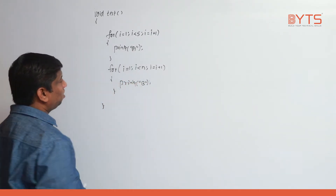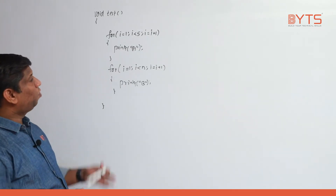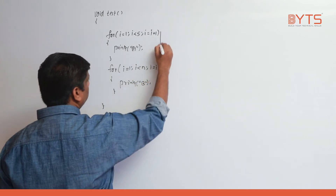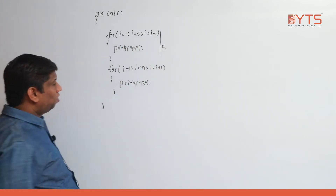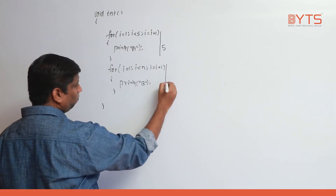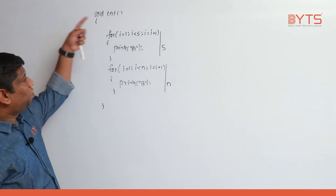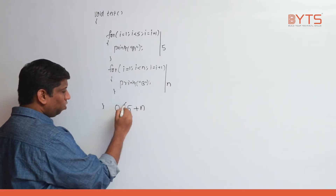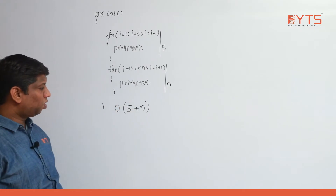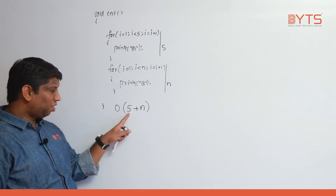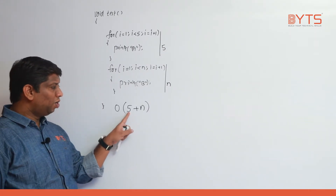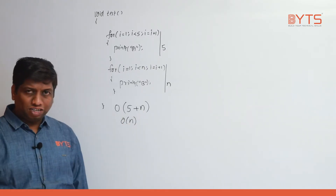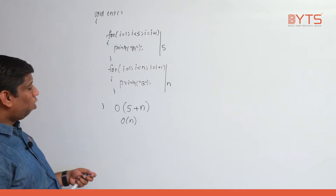Can you tell how many times the first loop is repeated? Five times. The second loop is repeated how many times? N times. So what is the total time this program will take? O of 5 plus n. Five being a constant, I can replace it with 1, so 1 plus n becomes O of n. The time complexity of this program is O of n.